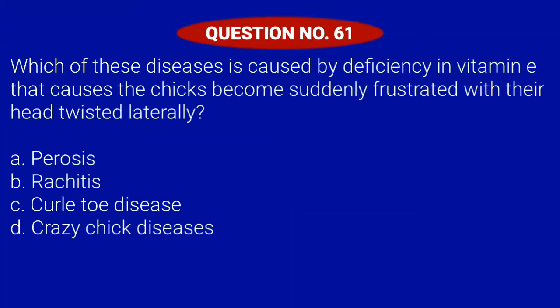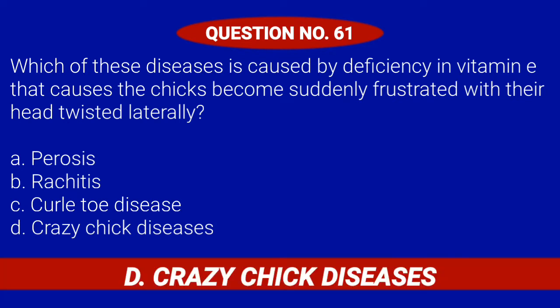Question number 61. Which of these diseases is caused by deficiency in vitamin E that causes the chicks to become suddenly frustrated with their head twisted laterally? Letter A: Parosis. Letter B: Rikitis. Letter C: Coral toe disease. Or Letter D: Crazy chick disease. Correct answer is Letter D: Crazy chick disease.